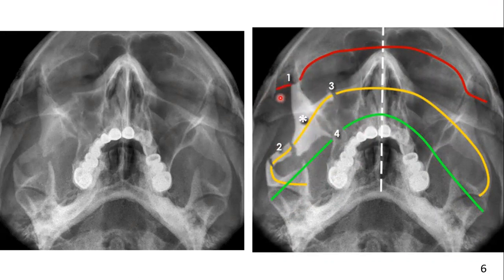Follow the first line while passing over the zygomaticofrontal suture. You will see a disruption here. Follow the next areas — the supraorbital ridge or margin, then the frontal sinus area, and the opposite supraorbital margin — and you will not find any fracture. Now come to the second line, passing through the zygomatic arch. You can see the fracture clearly here.